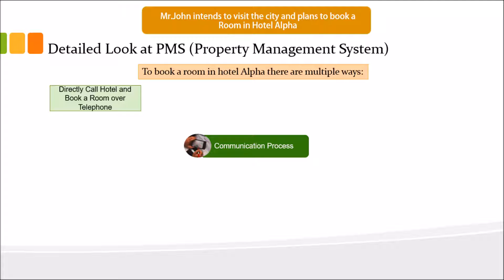Calling directly used to be more popular before the internet boom, but it's still used — especially when a guest has stayed before or was referred by a friend. The benefit of calling directly is that you can negotiate the rate. Depending on occupancy, if you call in the evening when occupancy is low, you can sometimes get better rates than those listed on the hotel website.